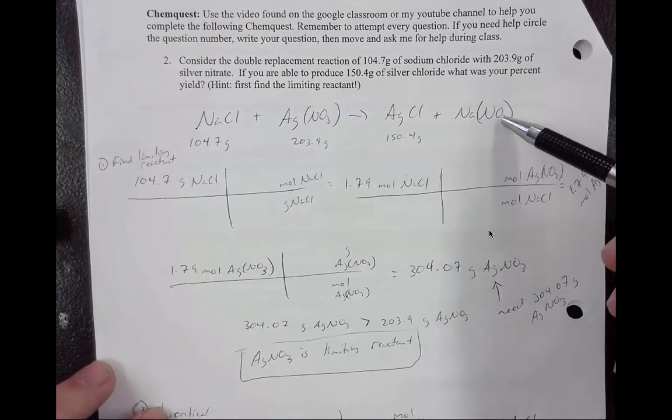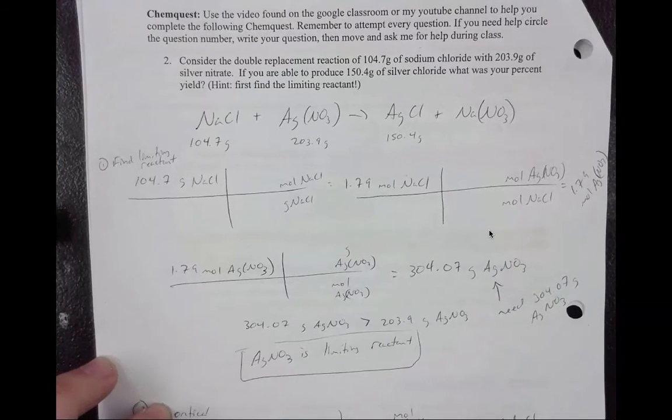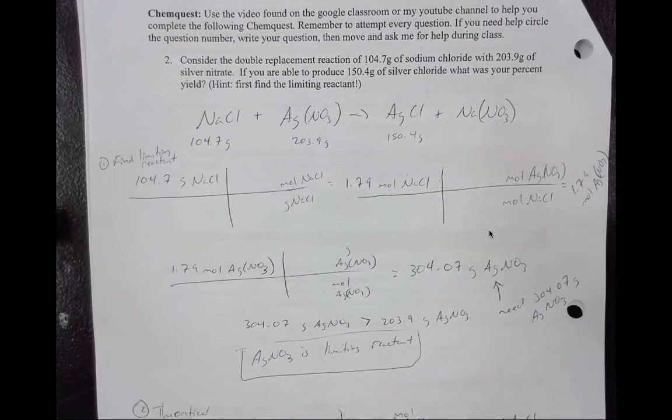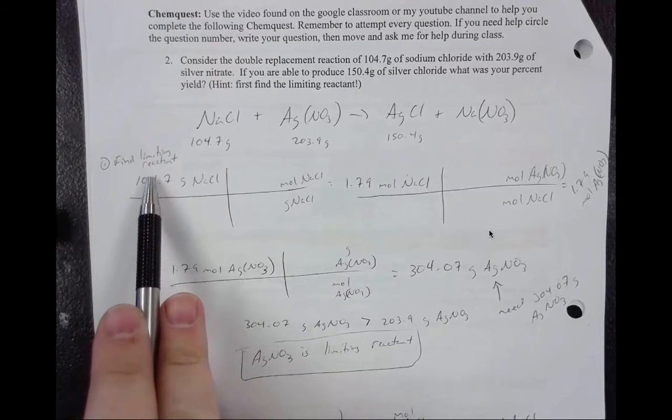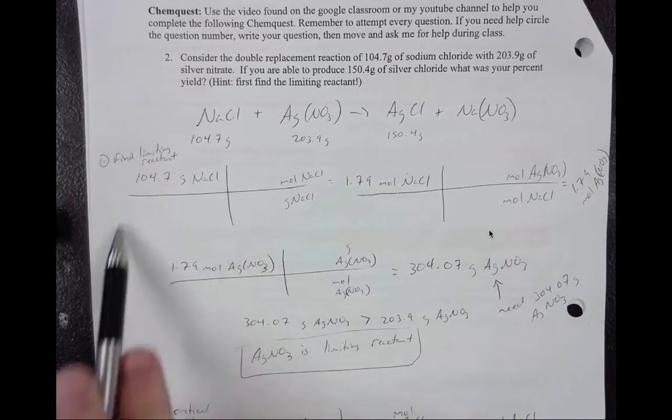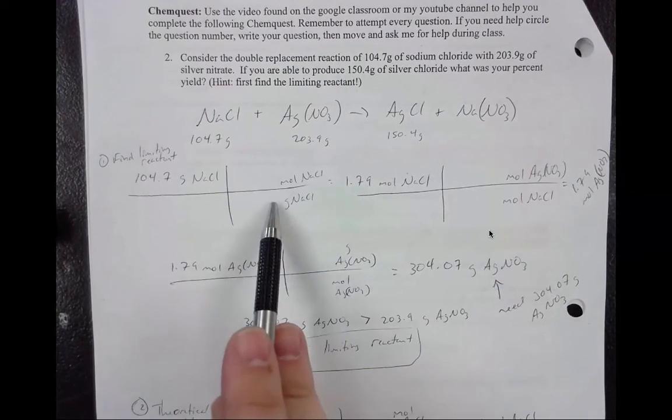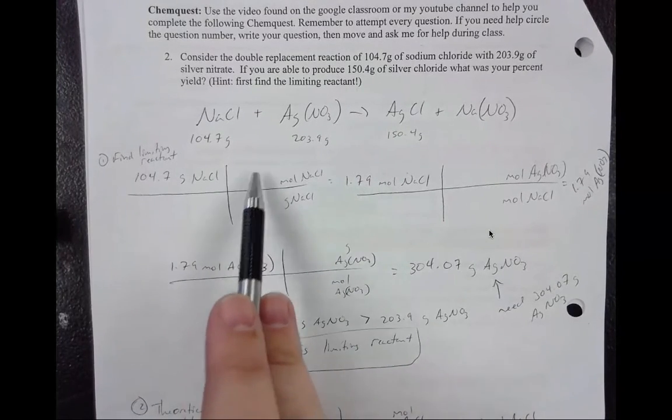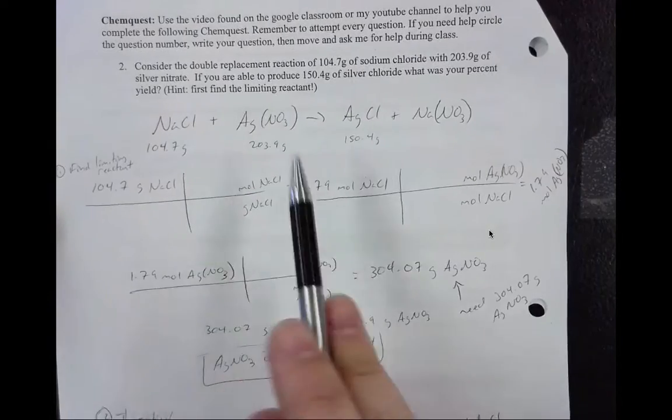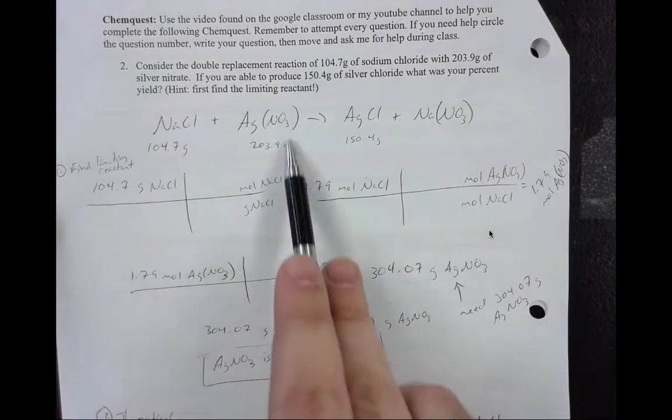So you can see here I have my balanced reaction. Sorry about that. I thought I might have forgot the coefficients but it's all good. So we find the limiting reactant. You can look at your limiting reactant steps. So the first thing to do is take the grams of one of the reactants and convert it to moles, which I did here. Mass you find on your periodic table, it's always one mole. After you find your moles, we can then use our mole ratio to find the moles of the other reactant.